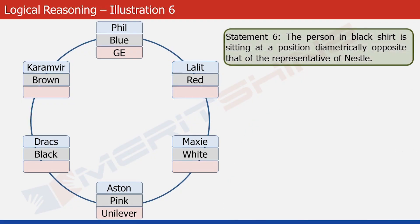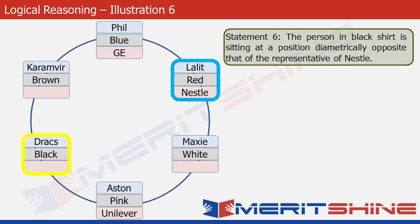The next statement we use is statement six. It states that the person in the black shirt is sitting at a position diametrically opposite that of Nestle's representative. The box highlighted in yellow belongs to the person wearing the black shirt, and the diametrically opposite position is the box highlighted in blue. It's obvious that Nestle's representative is Lalit, so we write Nestle in that box.